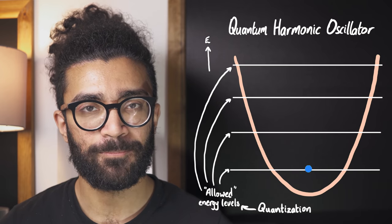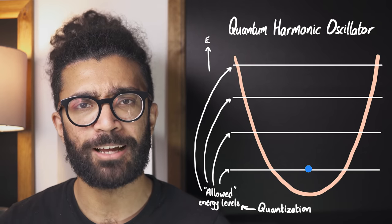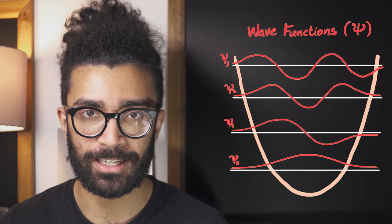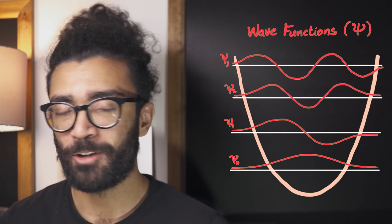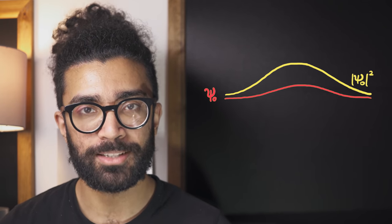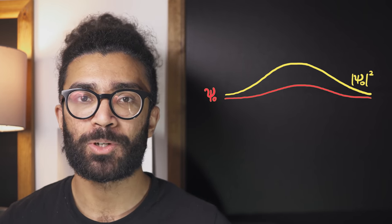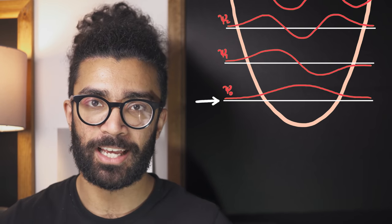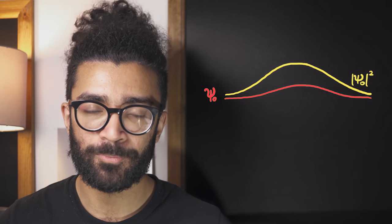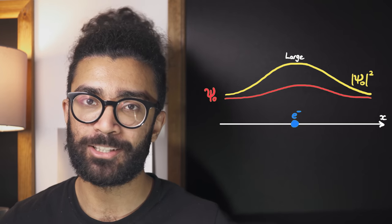Coming back to our quantum harmonic oscillator, we can say that the electron is allowed to have specific energy values, and for convenience I'm also going to be drawing in the wave function for each one of these quantum states — these allowed states. As a quick overview, if we took any one of these wave functions and squared it, we would be calculating the probability of finding our electron at a particular point in space. For example, if our electron has this energy — meaning it's in this energy level — then the wave function looks like this, and if we square it, it looks like this.